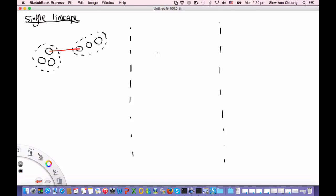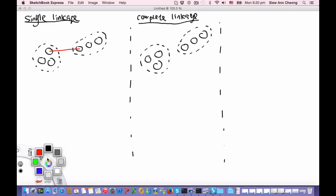Alternatively, we can also adopt the complete linkage algorithm. In the complete linkage algorithm, the distance between two clusters is actually the maximum distance between the two clusters. So this is the minimum distance, and this is the maximum distance between the two clusters, and this will be treated as the distance between two clusters.